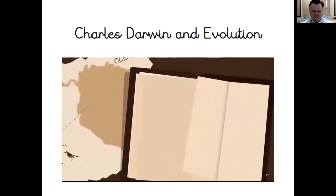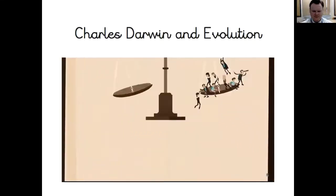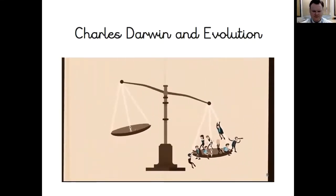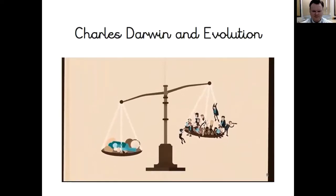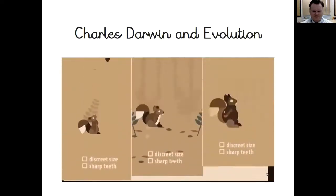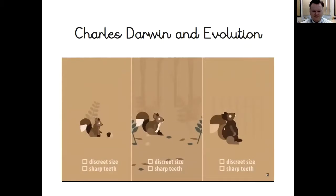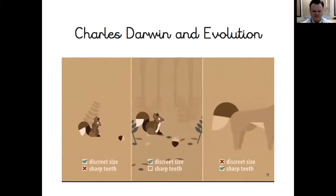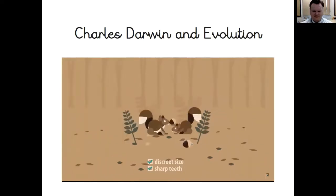How did this change happen? Darwin's inspiration came from an economist, Thomas Malthus, who believed that humans reproduced faster than their food supply. Darwin realized that animals always breed beyond their available resources, so the individuals who were better at surviving would be the ones to reproduce, and they would pass on any traits that had helped them survive.